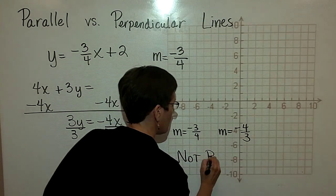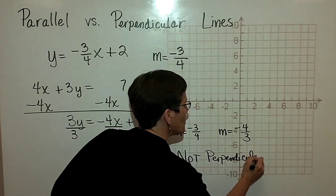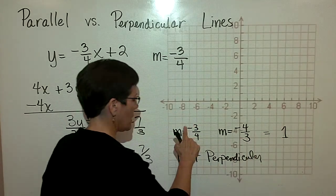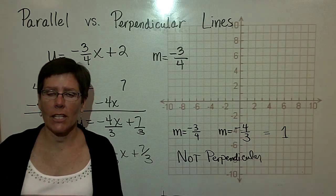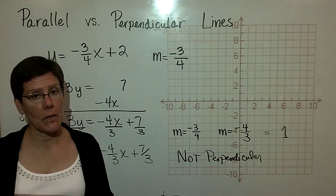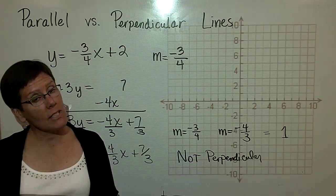Not perpendicular because their product should be negative 1. This particular product would equal a positive 1, because a negative times a negative is a positive. We've just finished looking at lines that are parallel and lines that are perpendicular. And for the most part, this is the conclusion to the graphs of linear equations. And specifically, I focused a lot on slope-intercept form.